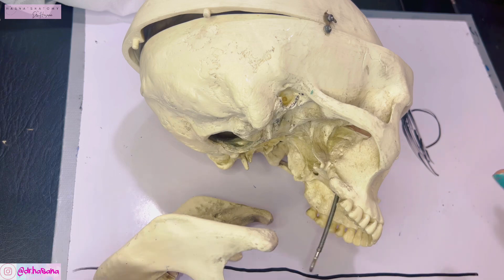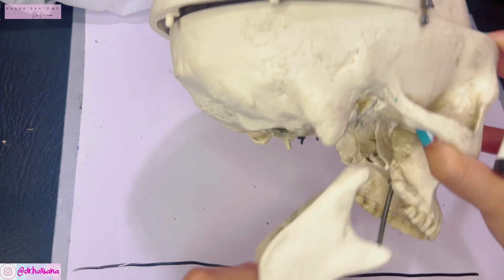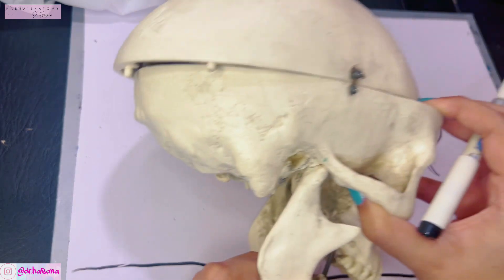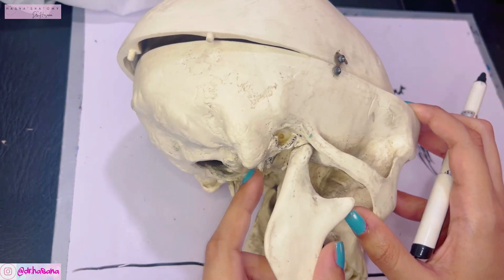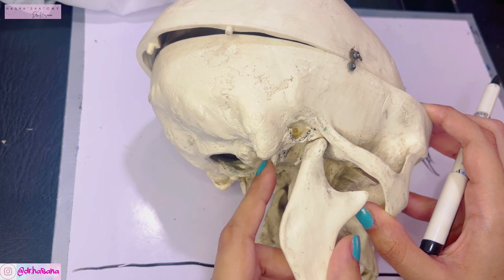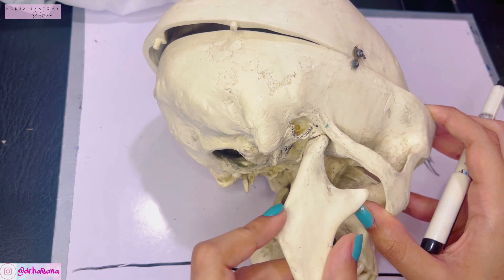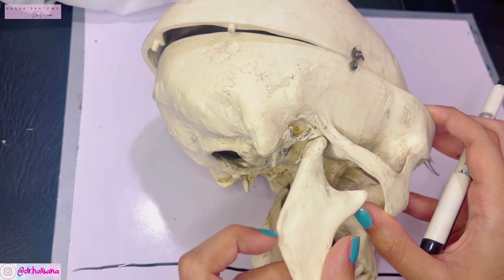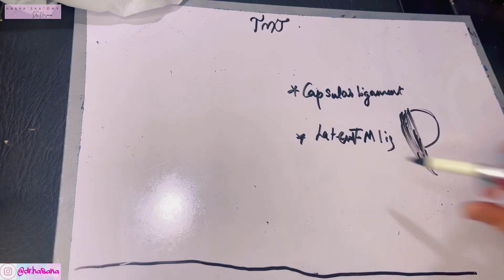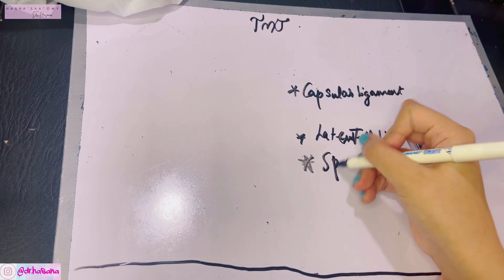The sphenomandibular ligament is a remnant of Meckel's cartilage, derived from the first pharyngeal arch. The final ligament of the TMJ is the stylomandibular ligament, which runs from the styloid process of the temporal bone down to the angle of the mandible posteriorly. Make sure you memorize the names of these ligaments.